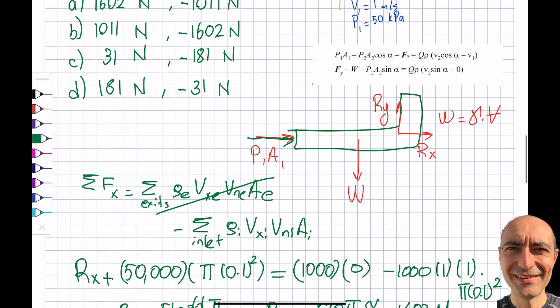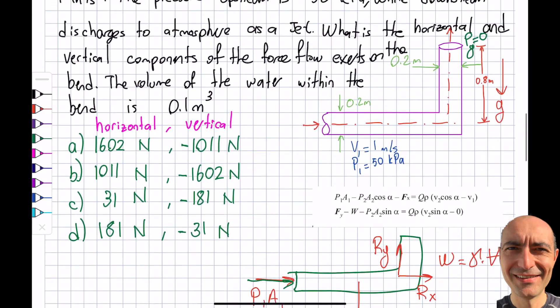But as I mentioned, I am asking you what is the force the flow exerts on the bend. So you need to multiply this by negative. And actually it makes sense, so think about this. Let's say that this is on a wheel.